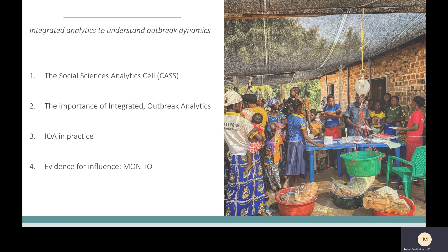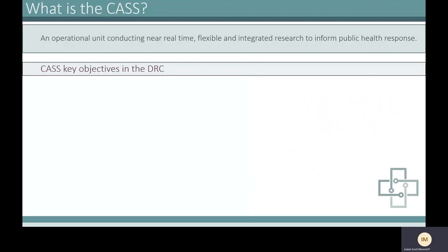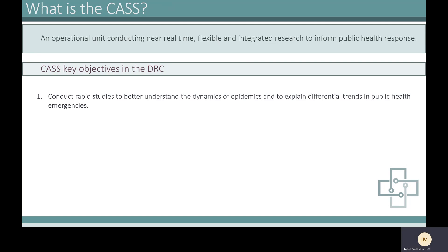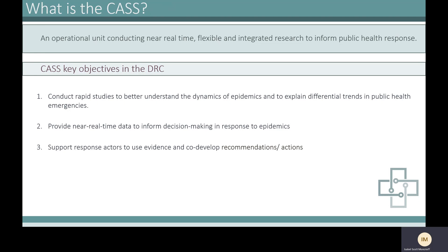I'll also cover how we support the use of evidence for influence and monitoring this using the MONITO monitoring tool. The CAS is an operational research unit that conducts near to real-time flexible integrated research in order to inform public health responses — through conducting rapid studies to better understand what is happening during an epidemic and to explain differential trends in data relating to public health emergencies. The CAS creates a space for integrated outbreak analytics, bringing together different actors and different data sources to provide a more complete, holistic picture of a public health emergency.